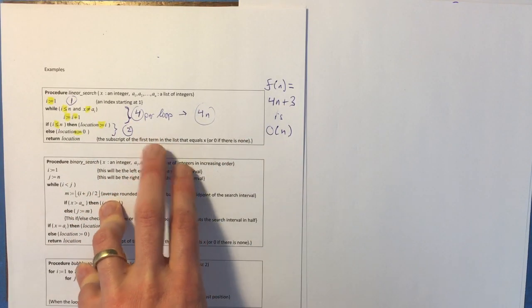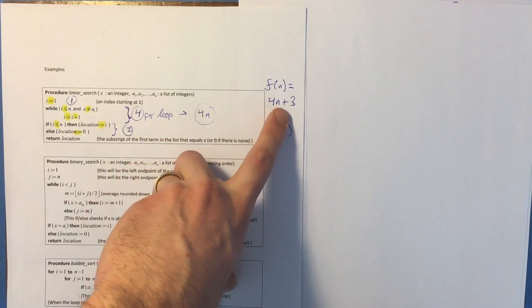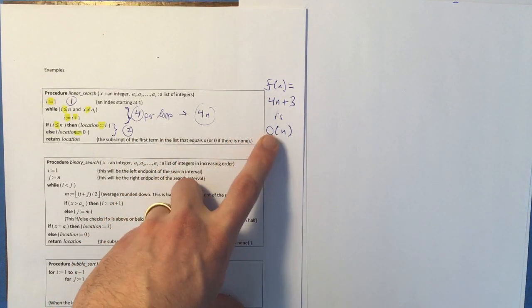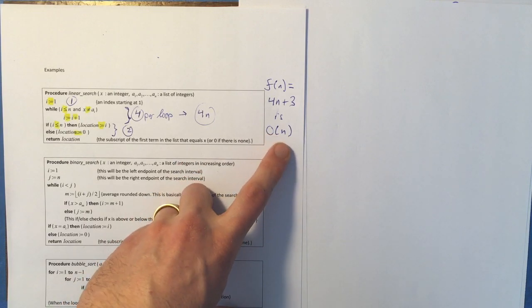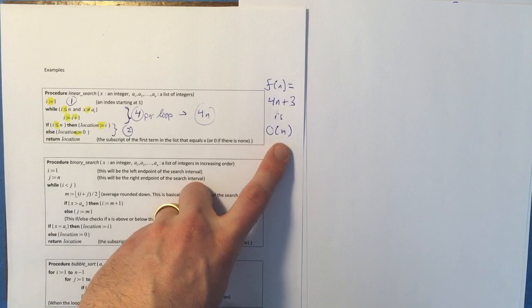But I don't really care that much about those small aspects of the function, because really what we care more about is what order. What order is the function. In this case, it's big O of n.